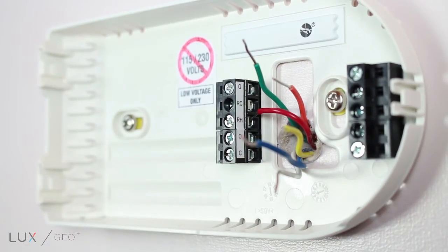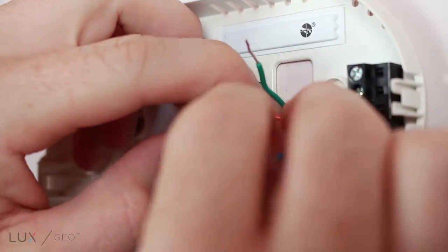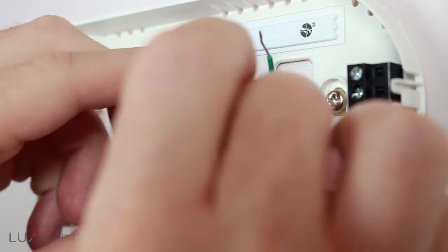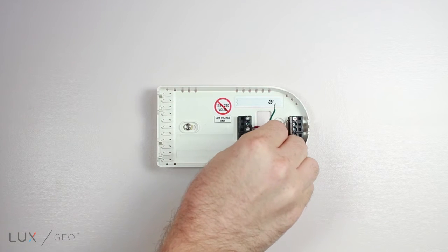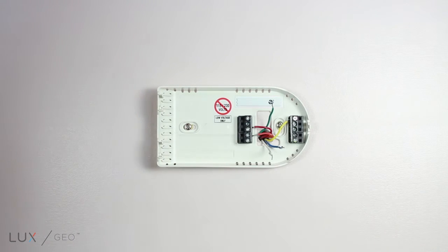The 24 volt power wire is red and will be connected to the RH terminal. The reversing valve is orange and will be connected to the O terminal. The heat pump outdoor unit is yellow and will be connected to the Y1 terminal.